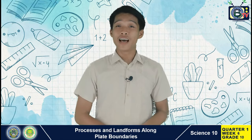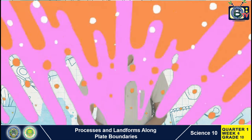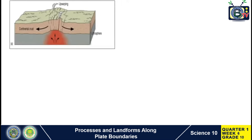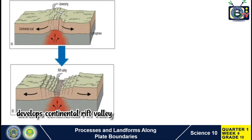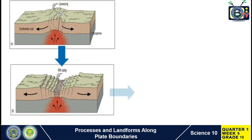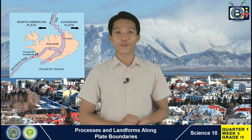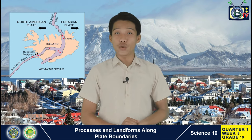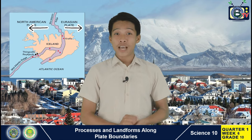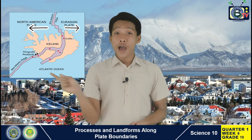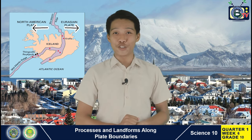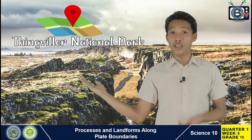Divergent plate movement can also occur in continental plates. As a continental plate starts to move apart, the crust will start thinning and develops a continental rift valley. The continental valley will develop into a narrow sea and later on into a wide ocean. One example of a country experiencing divergence is Iceland, which is located above the Eurasian plate and the American plate that are diverging from one another. That is why there are unique sceneries which tourists enjoy visiting, and one of the most frequently visited tourist attractions is the Thingvellir National Park.